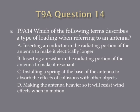Question 14: Which of the following terms describes a type of loading when referring to an antenna? A. Inserting an inductor in the radiating portion of the antenna to make it electrically longer. B. Inserting a resistor in the radiating portion of the antenna to make it resonant. C. Installing a spring at the base of the antenna to absorb the effects of collisions with other objects. Or D. Making the antenna heavier so it will resist wind effects when in motion.